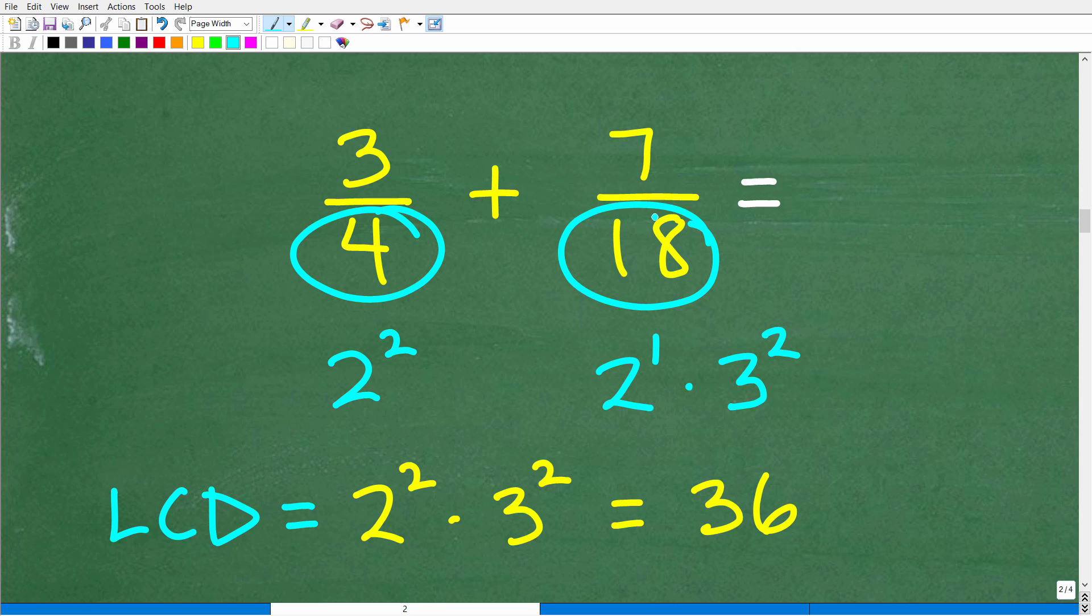Okay, so again, we're not using our calculator here. So we're going to have to figure out what three fourths plus seven eighteenths is equal to. So here we have three fourths plus seven eighteenths. So we know how to add fractions. Well, we cannot add fractions or subtract fractions unless the denominators are the same.